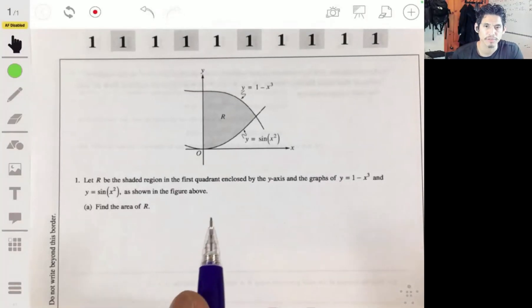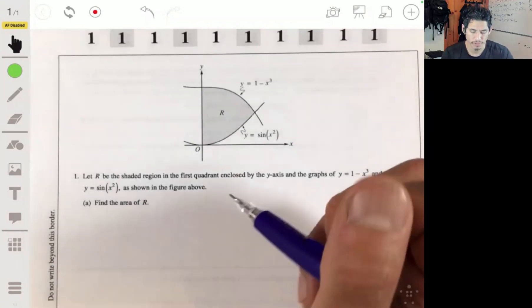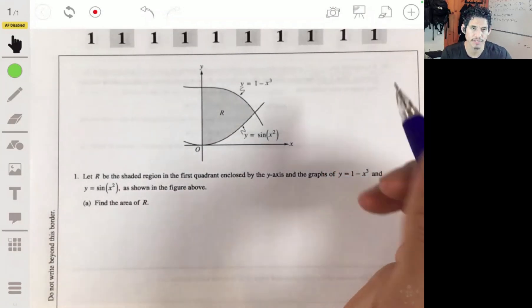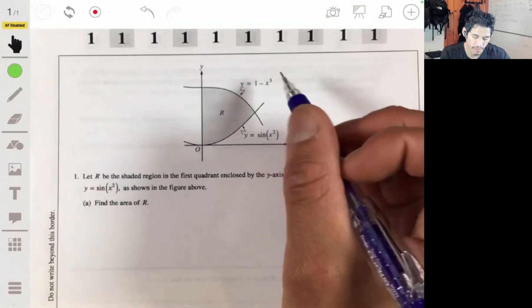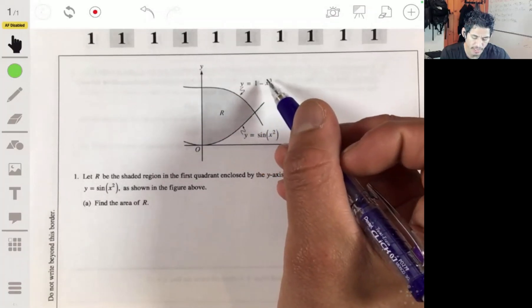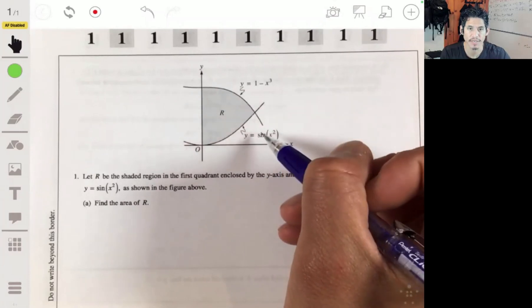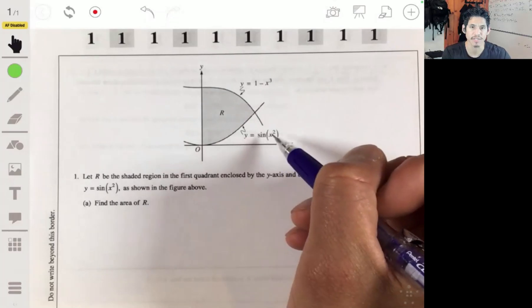All right, going over free response question one from the 2013 practice exam. We have this shaded region bounded by the line y equals 1 minus x cubed, and at the bottom y equals the sine of x squared.